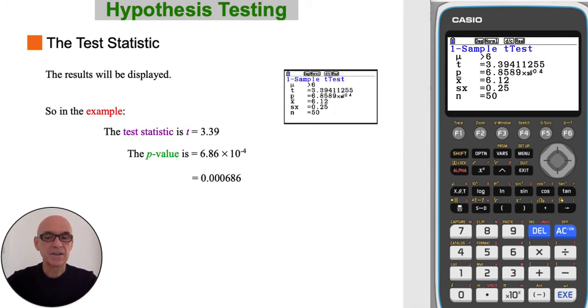Then write down the test statistic and the p-value correct to three significant figures, as shown here.